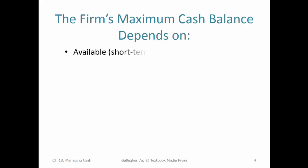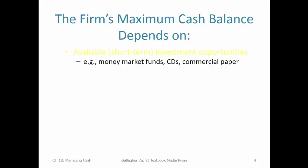On the maximum side, we're going to think about what investment opportunities are available and what the rates of return on them are. We can look at things like money market funds, investing in short-term bank CDs, and commercial paper. Money market mutual funds typically invest in commercial paper, which is just short-term bonds — something like 30 or 60-day corporate bonds. It's like the corporate world's version of treasury bills.